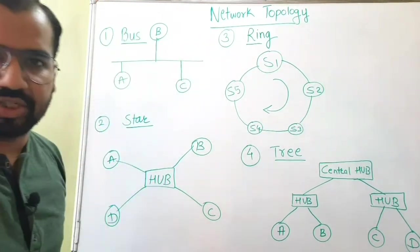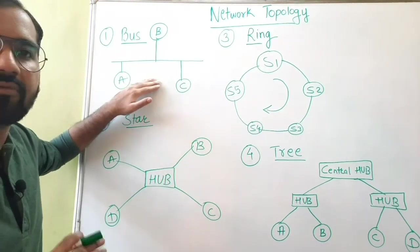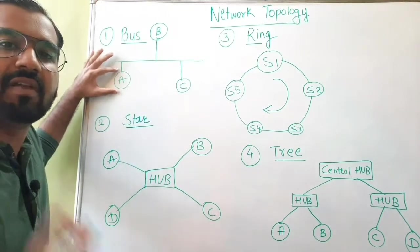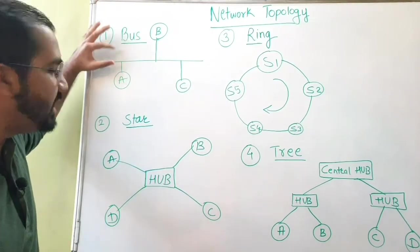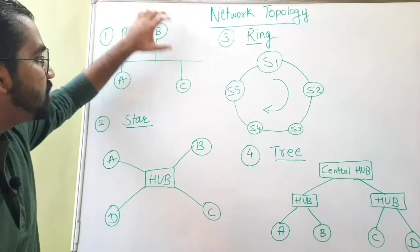So what approach we have to follow in bus topology is that when one station or node or device is sending the data using this particular cable for transmission, others should stop.